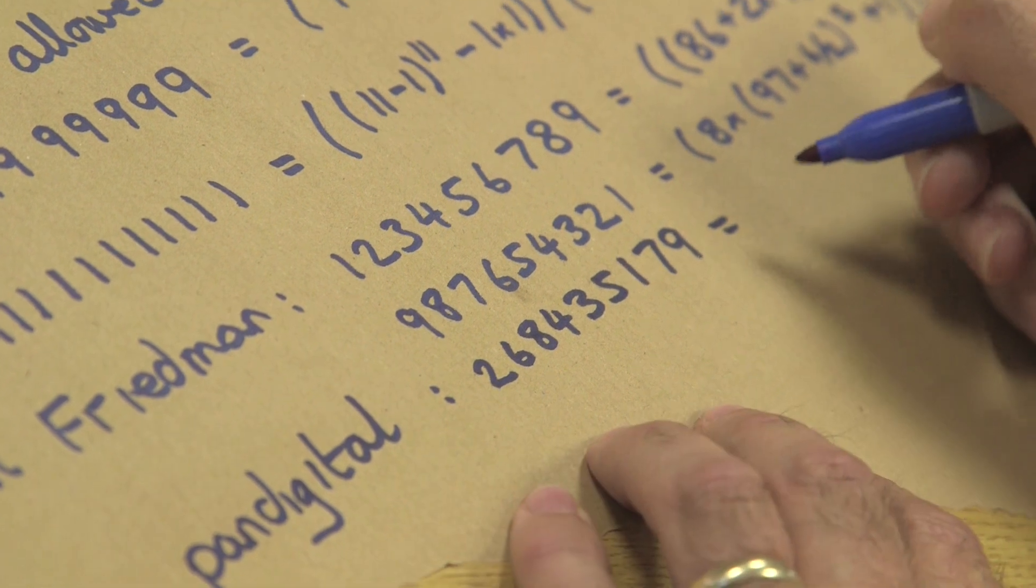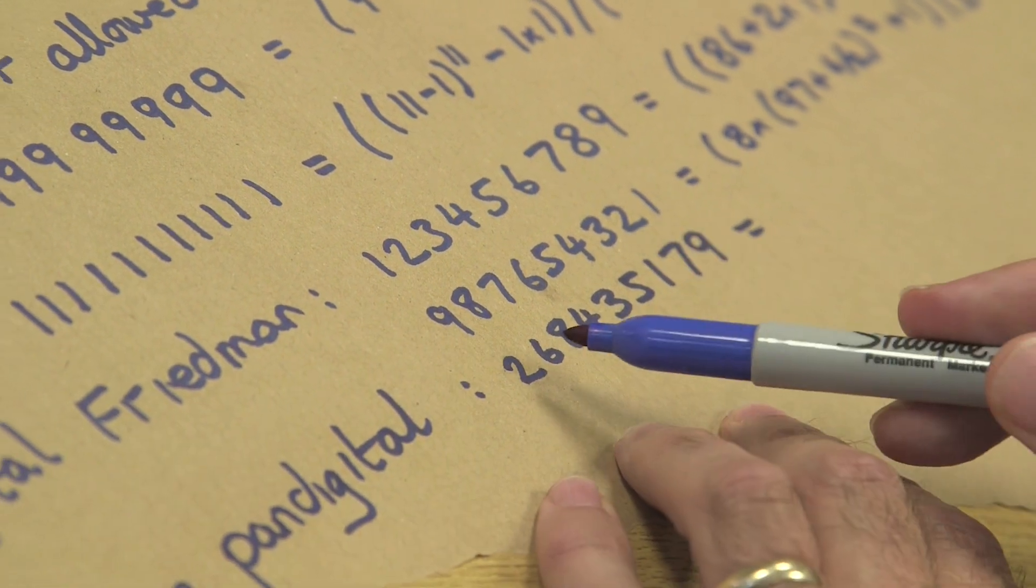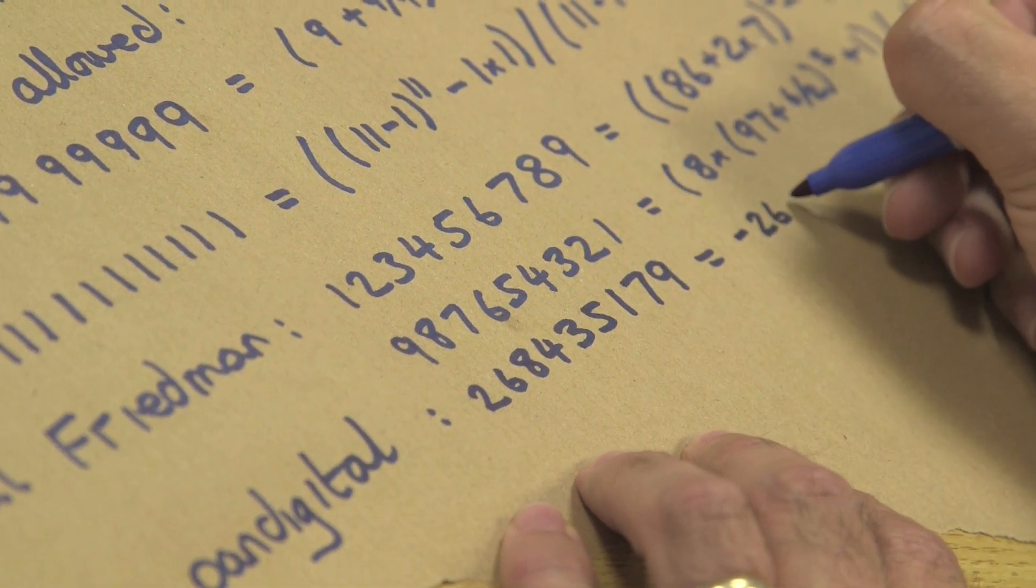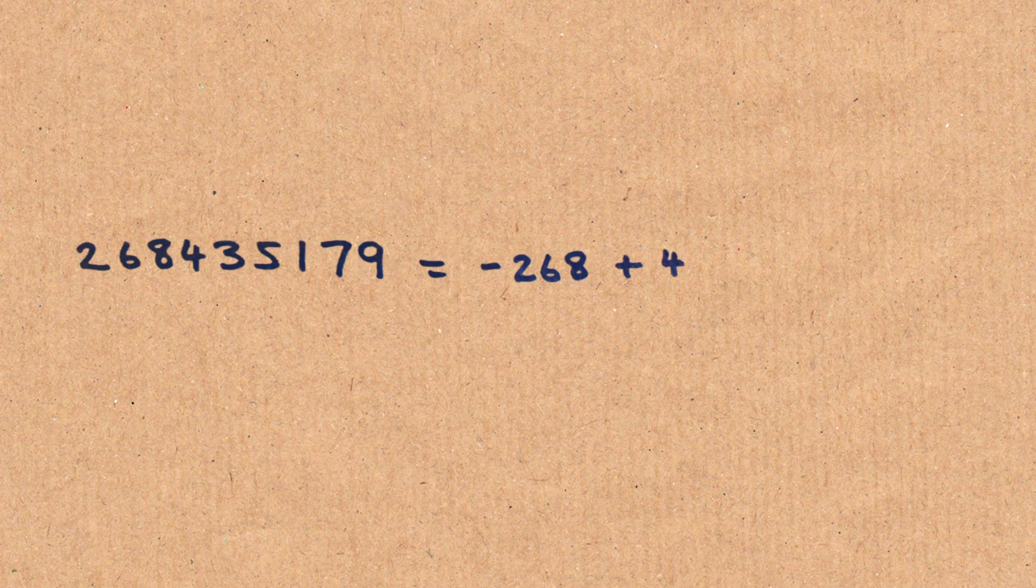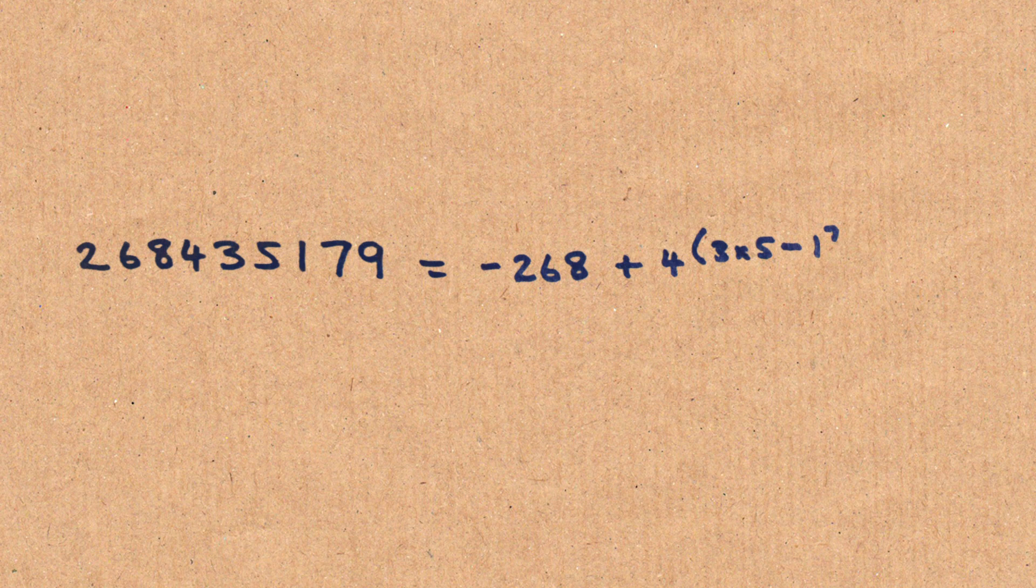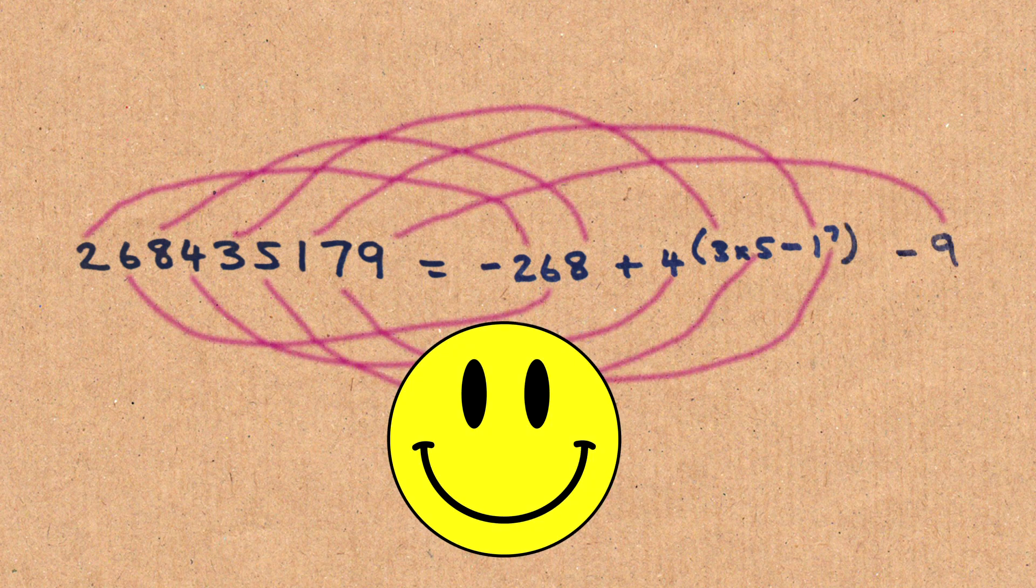And that is equal to, remember, what's nice about it is the order remains the same. So it's minus 268 plus 4 to the power of 3 times 5 minus 1 to the power 7 minus 9. And that will give you back your original number.